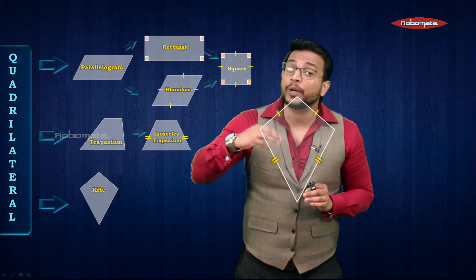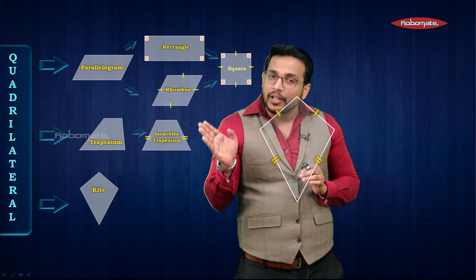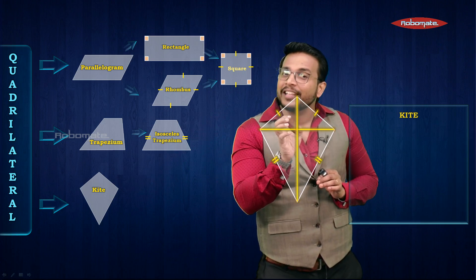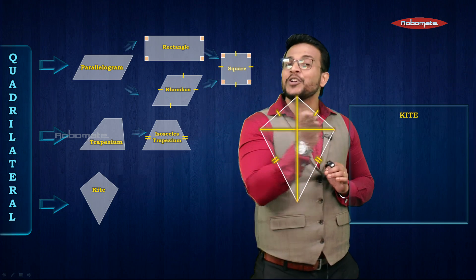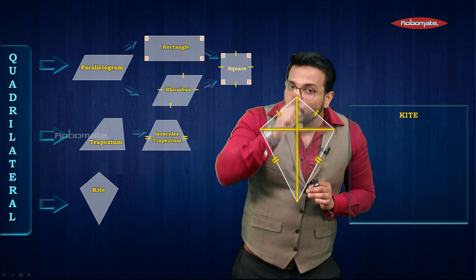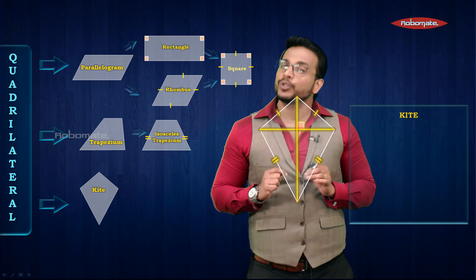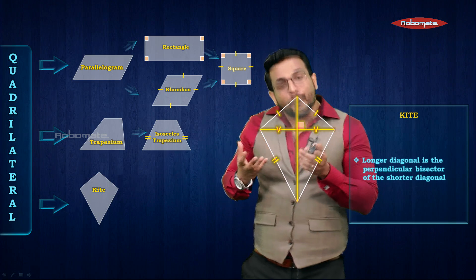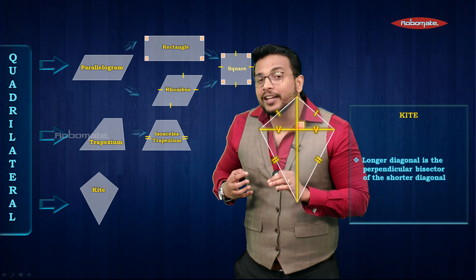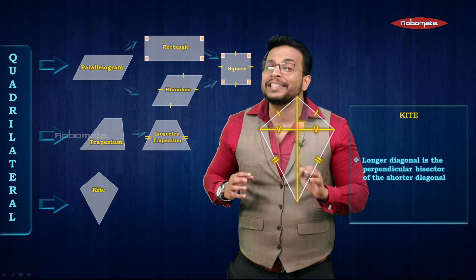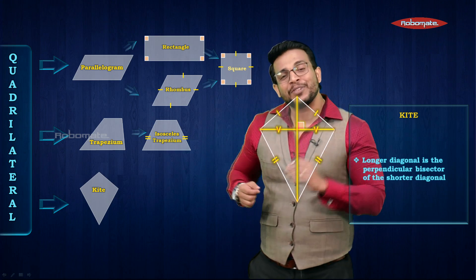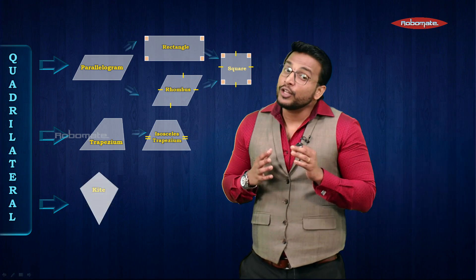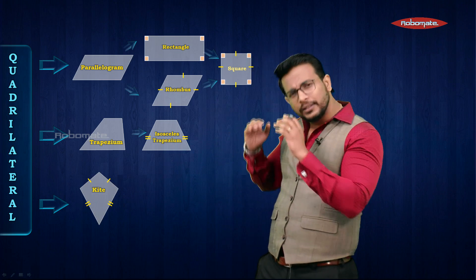There is only one property of a kite, which relates to its diagonals. Drawing the diagonals — one longer and one shorter — the longer diagonal is perpendicular to the shorter diagonal, and the longer diagonal also bisects the shorter diagonal. Therefore, the property of a kite is: the longer diagonal is the perpendicular bisector of the shorter diagonal.